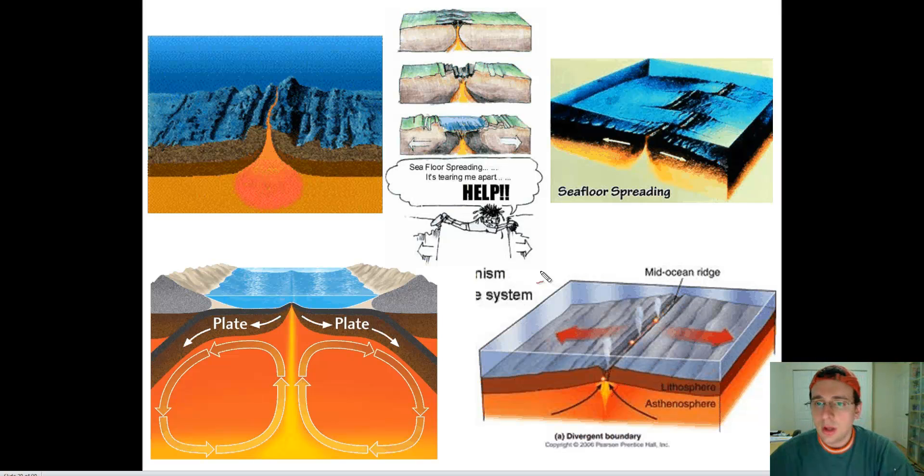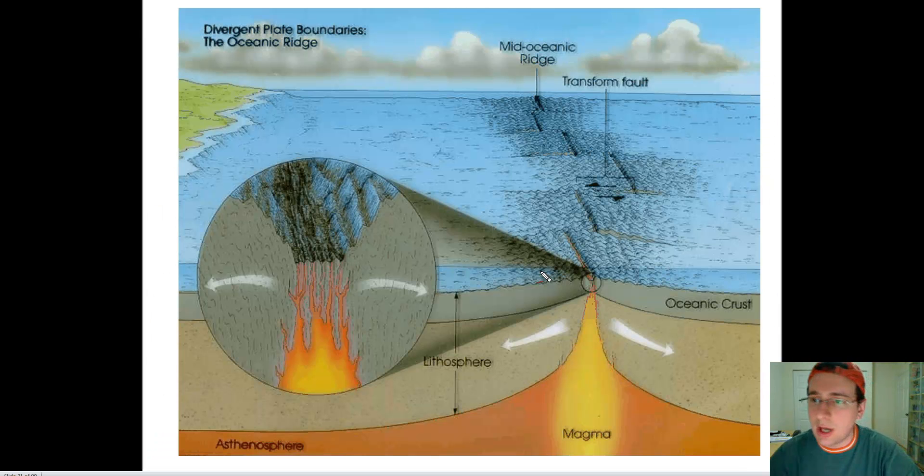Now, what evidence is there to support that this is actually a fact, that we actually have seafloor spreading? Because when you look at the mid-ocean ridge, all you see is a ridge. You don't actually see this happening. You can't actually quantify this happening, at least not until very recently. So what evidence is there to figure out that this is actually indeed happening?